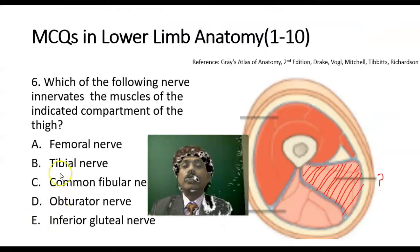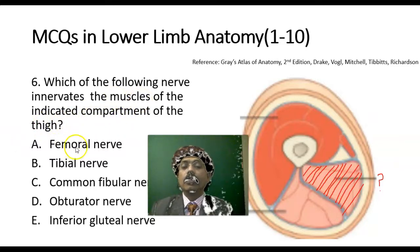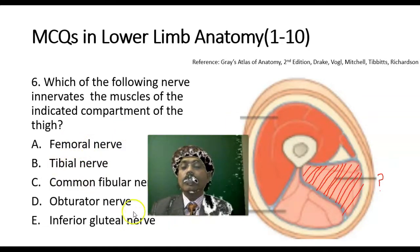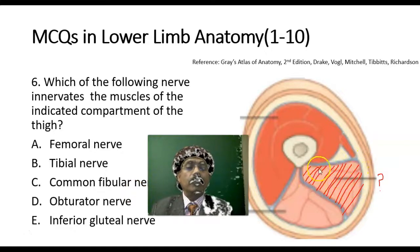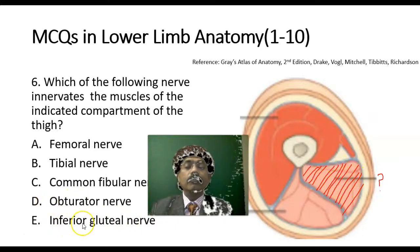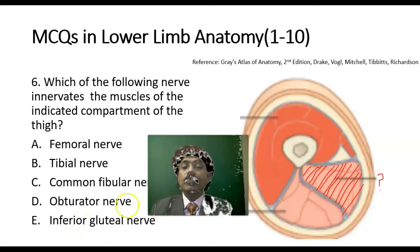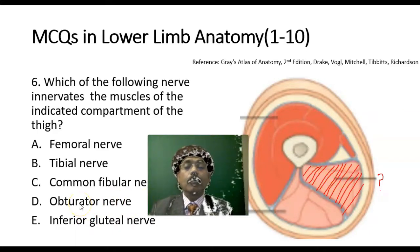Question number 6: Which of the following nerves innervates the muscles of the indicated compartment of the thigh? The femoral nerve goes anteriorly, the tibial nerve goes posteriorly, the common fibular nerve goes laterally. The obturator nerve is the nerve for the adductor compartment of muscles. So these muscles are innervated by the obturator nerve. Answer should be D.